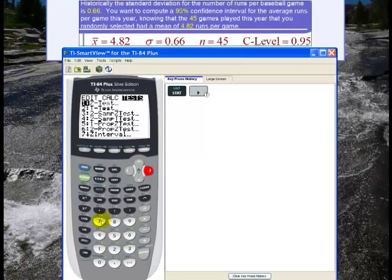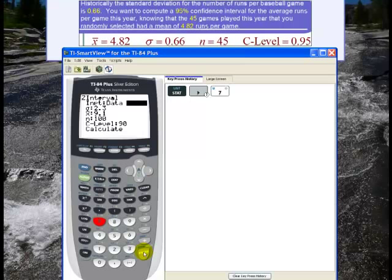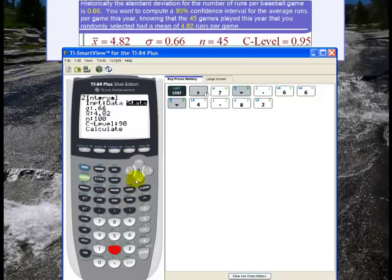That's number 7, so I type 7. I do want Stats, not Data, because I have statistics given. So I scroll down to σ, which is 0.66, and then I scroll down to x̄, which is 4.82, and then I scroll to n, which is 45.